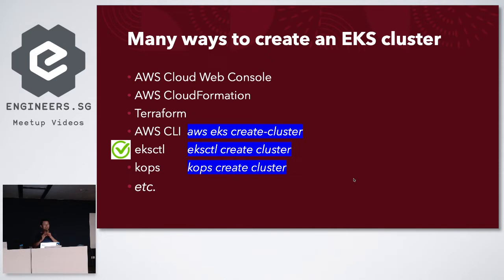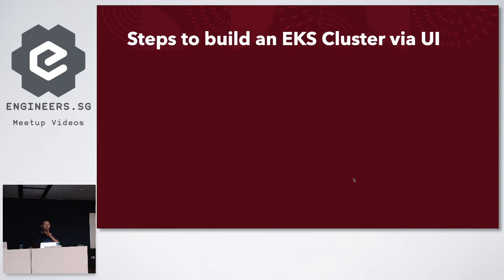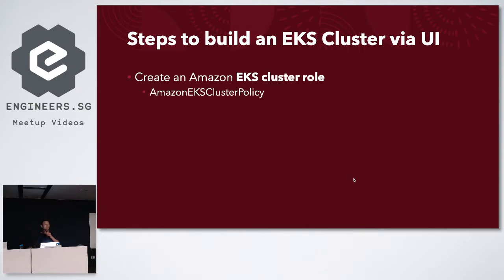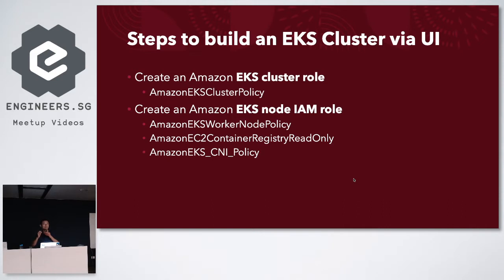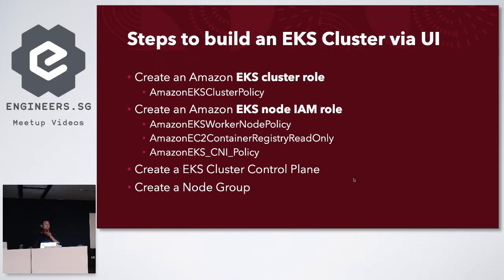I'm going to focus on how I created the automation using eksctl. Before showing the automation, let me show you what the manual steps look like from the web console. First, you need to create the Amazon EKS cluster IAM role with the listed policy. Then create the EKS node IAM roles with three different policies. Once you have the roles, you create the control plane node first, followed by creating the node group. Especially for a developer who just needs a Kubernetes cluster to run their application, dealing with IAM roles and policies is very challenging — that's why I created this automation.